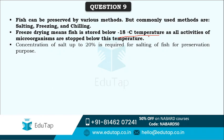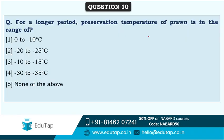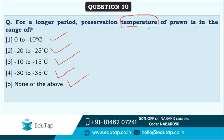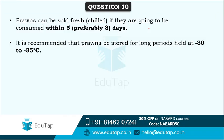Pickling is the method in which fishes are converted into pickles. I hope the difference between all these options is clear. Next question: for longer period preservation, the temperature of prawn should be in the range of what? Options are 0 to minus 10, minus 20 to minus 25, minus 10 to minus 15, minus 30 to minus 35, or none of the above. The correct answer is option four - minus 30 to minus 35 degrees Celsius. Prawns can be sold fresh if consumed within three days, but for storage beyond three days they must be kept at minus 30 to minus 35 degrees Celsius.